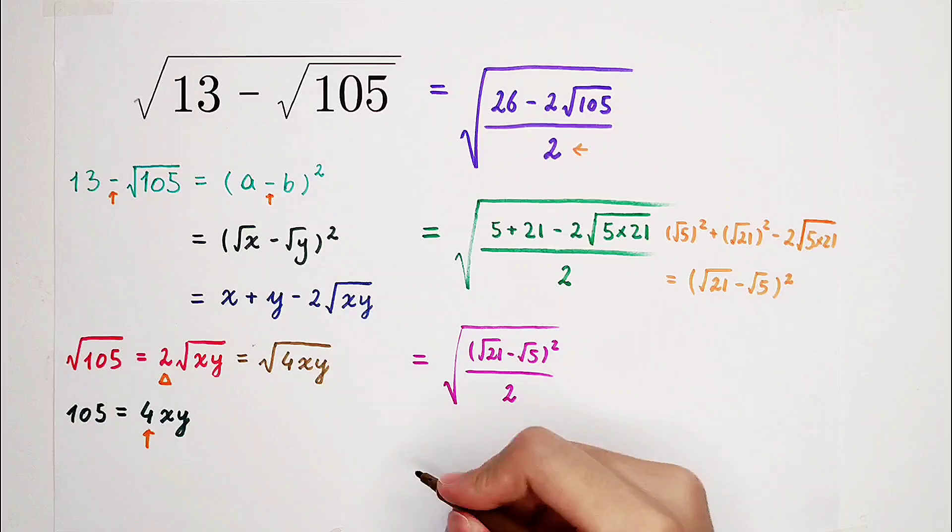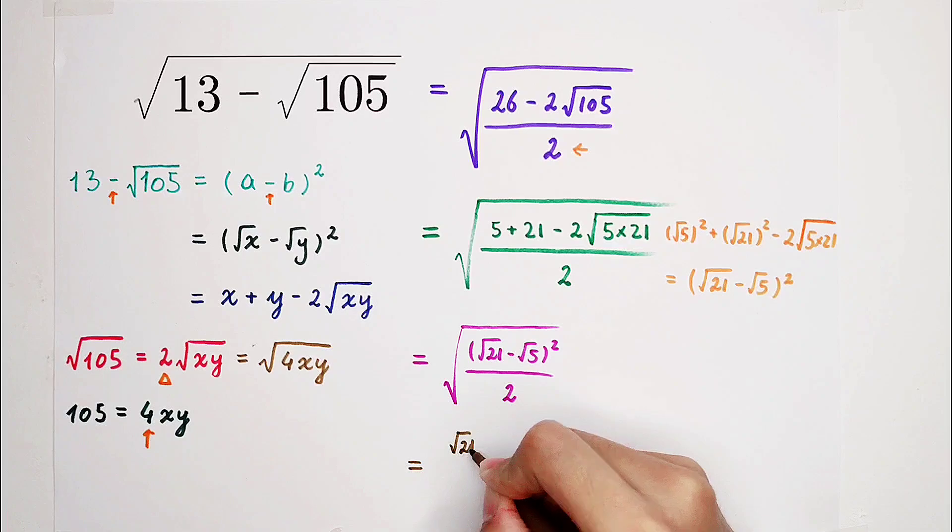So then it can be written as, it is only equal to square root of 21 minus square root of 5, over square root of 2.